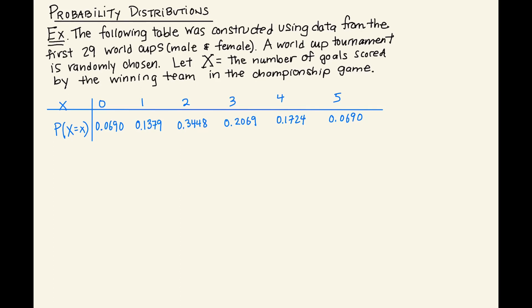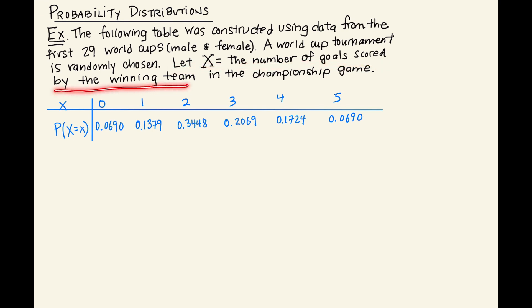This video is an introduction to probability distributions. In this example, the following table was constructed using data from the first 29 World Cups, male and female. A World Cup tournament is randomly chosen. Let X equal the number of goals that were scored by the winning team in the championship game.